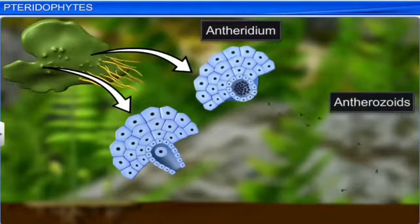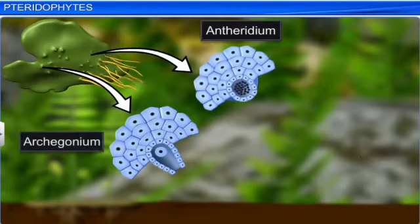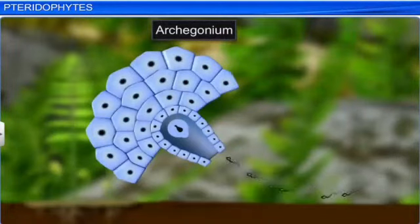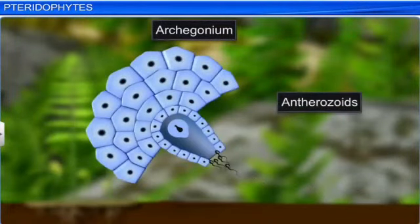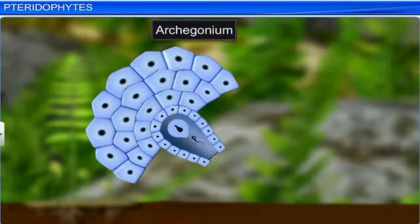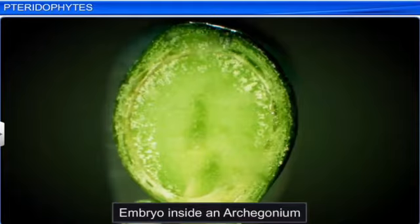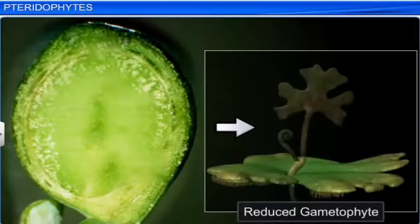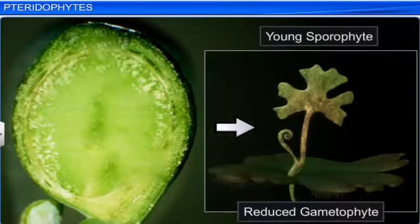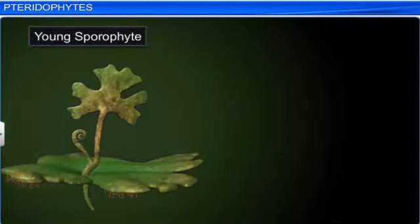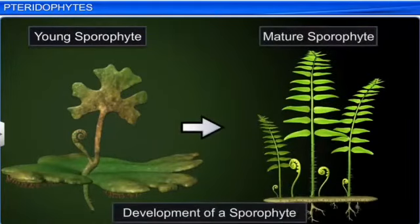Water is required for the transfer of the antherozoids — that is the male gametes released from the antheridia — to the mouth of the archegonia. The fusion of the male gamete with the egg present in the archegonium results in the formation of the zygote. The zygote thereafter produces a multicellular, well-differentiated sporophyte, which is dominant. Water is absolutely essential for fertilization to take place. The embryo inside the archegonia later gets transformed into a young sporophyte in a reduced gametophyte form, which subsequently gets transformed into a mature sporophyte.